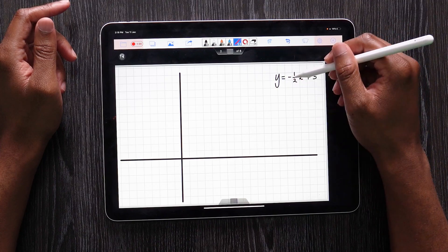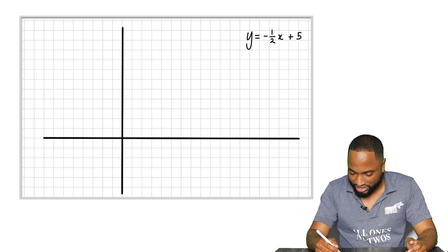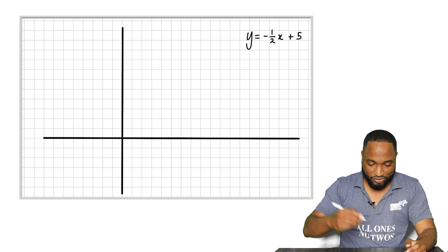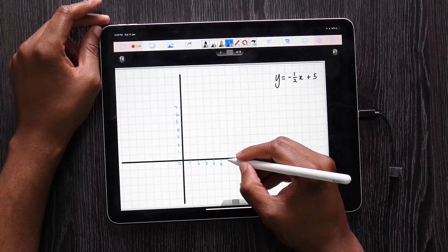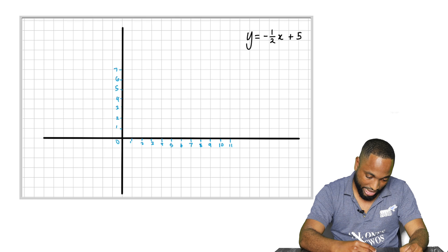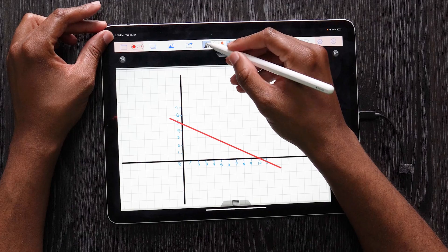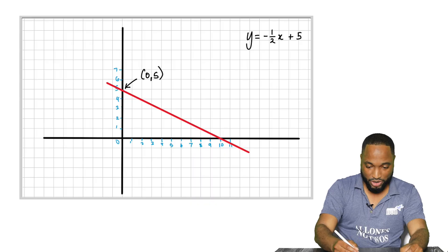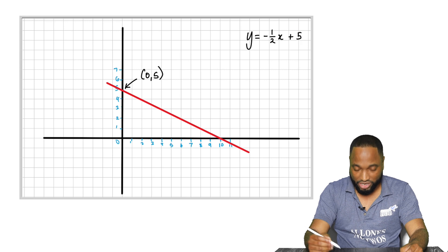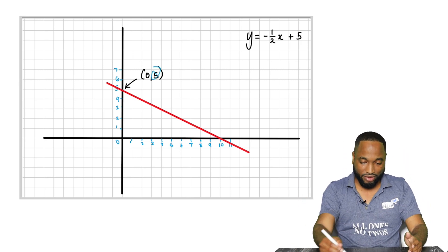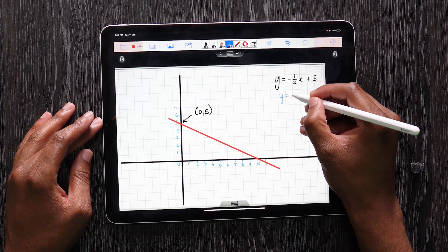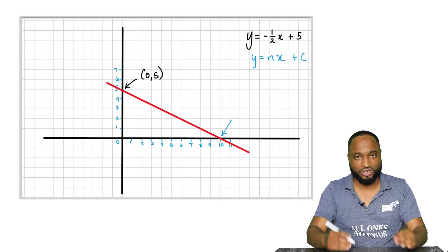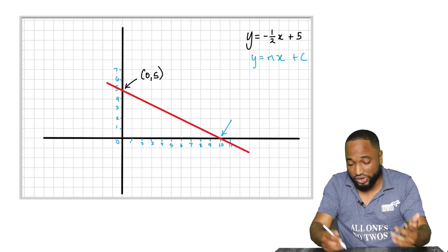If I created a line y equals negative a half x plus 5, this line would look like this. What's the y-intercept here? The y-intercept would be (0, 5), and we know from the last video that this number indicates to us what the y-intercept is going to be. This is in the form y equals mx plus c. The number here tells us the gradient, so there's no number to really tell you what the x-intercept is in the equation of the line.